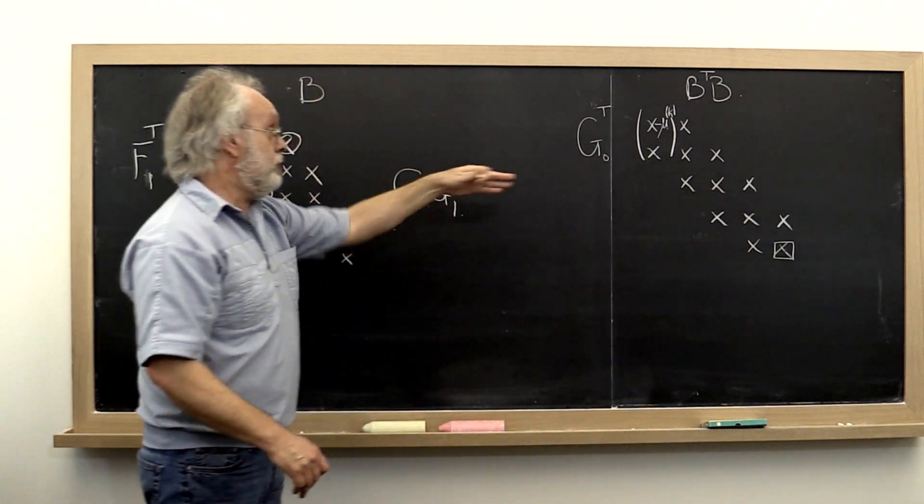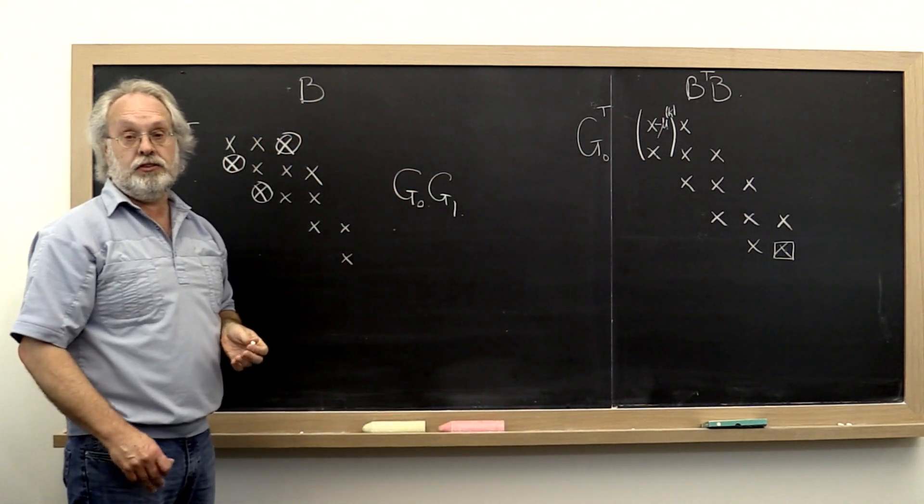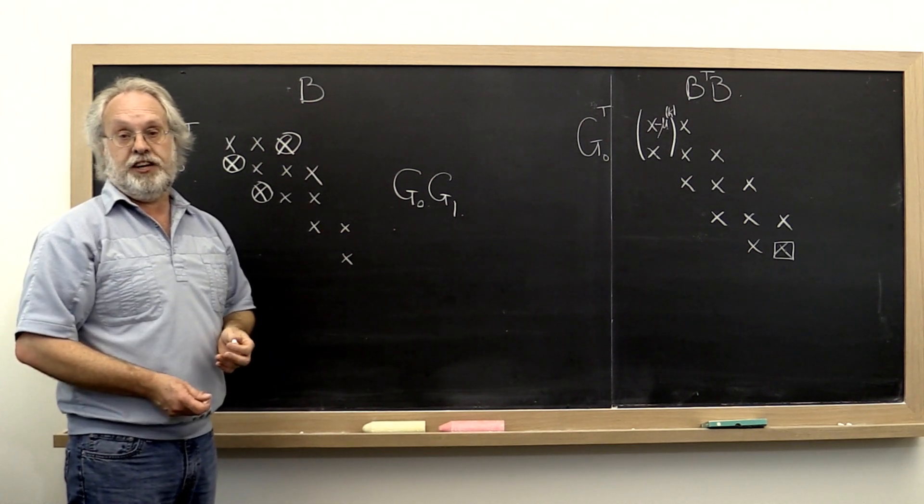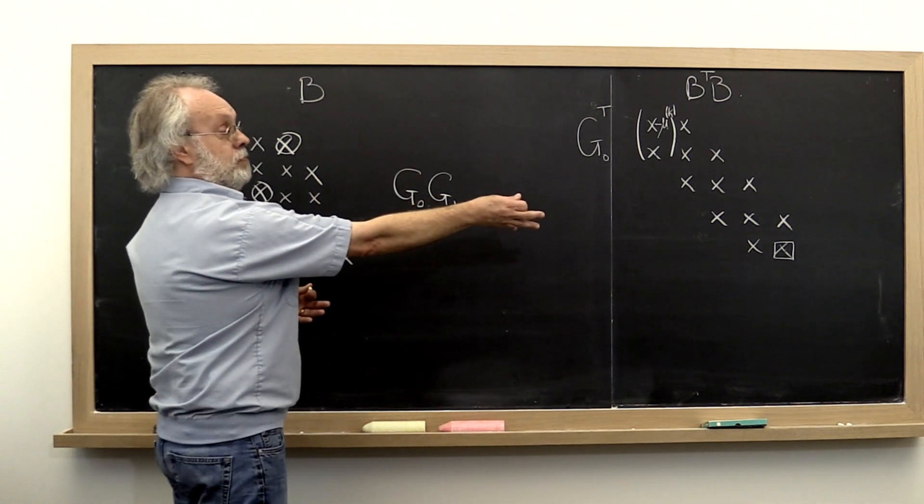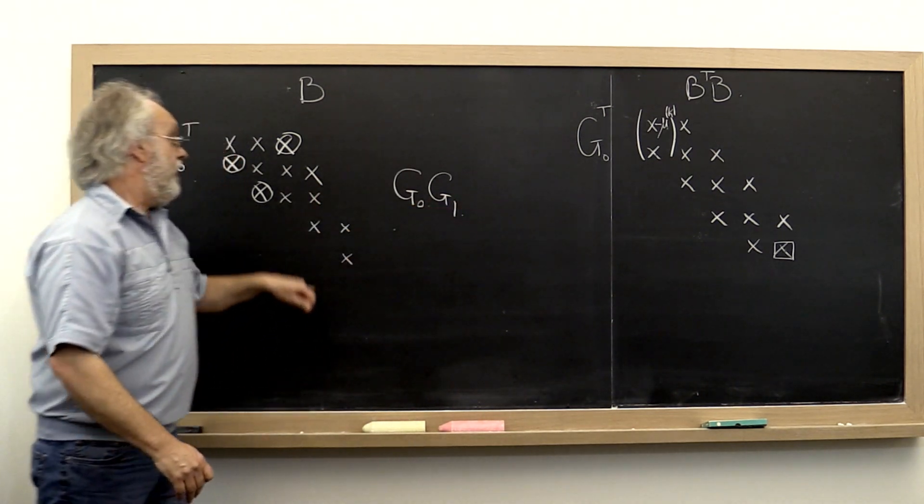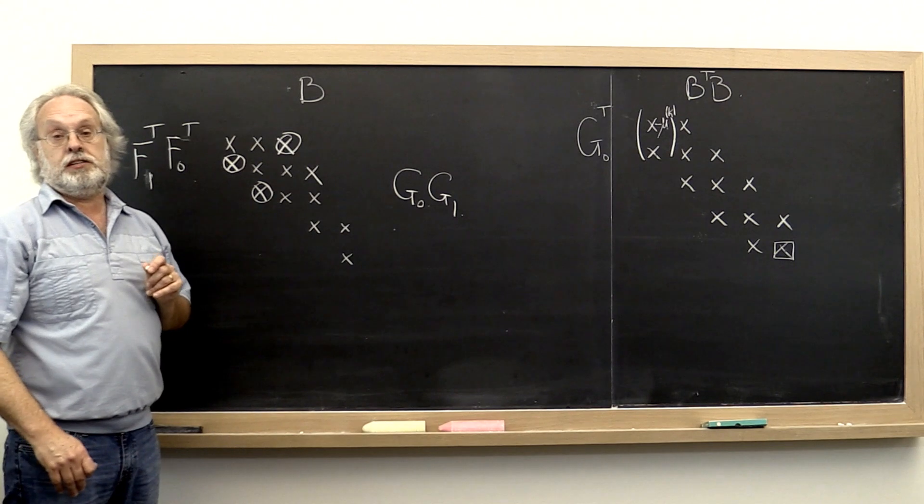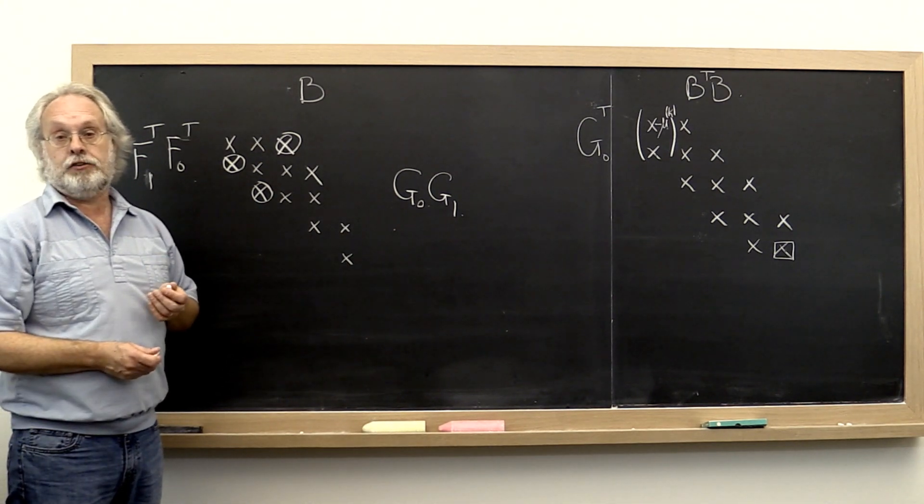we know that that matrix eventually becomes diagonal and that we can do things like deflation with it. And if that matrix becomes diagonal eventually, then this bidiagonal matrix must eventually become diagonal as well.